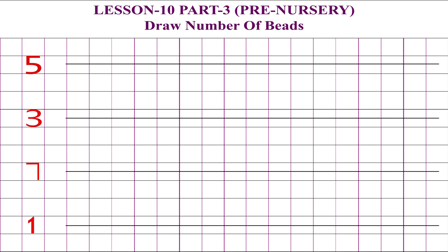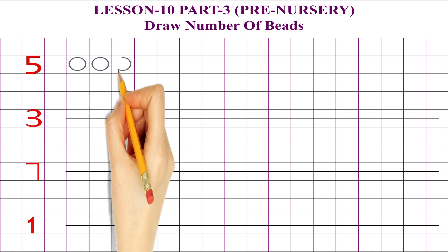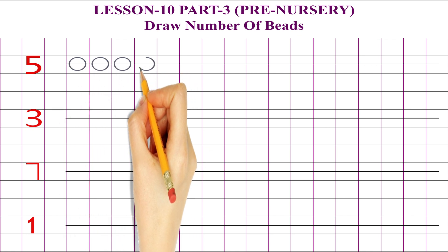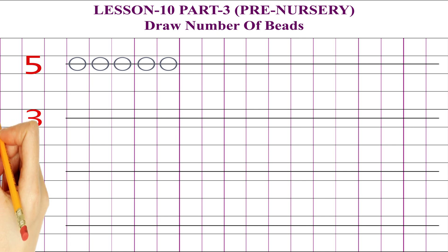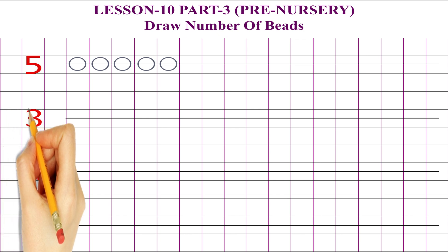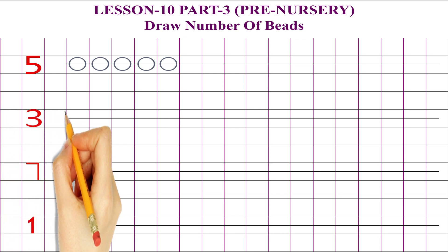Our first number is 5. Ask your child to draw 5 number of beads: 1, 2, 3, 4, 5. Yes, very good! Very nice — draw very neatly and nicely. Next number is 3. Ask your child to draw 3 number of beads.